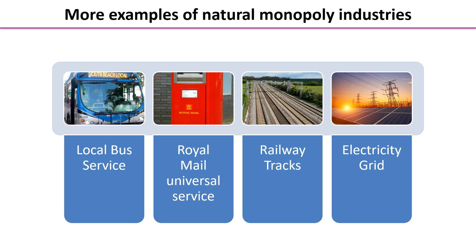More examples of natural monopolies: think about your local bus service — it would be a waste of scarce resources to have three or four companies running exactly the same route. It would be daft to have four or five different post boxes next to each other so the customer can choose which postal service to use. The same applies to railways and electricity. Any industry with a significant network of distribution often qualifies as a natural monopoly.